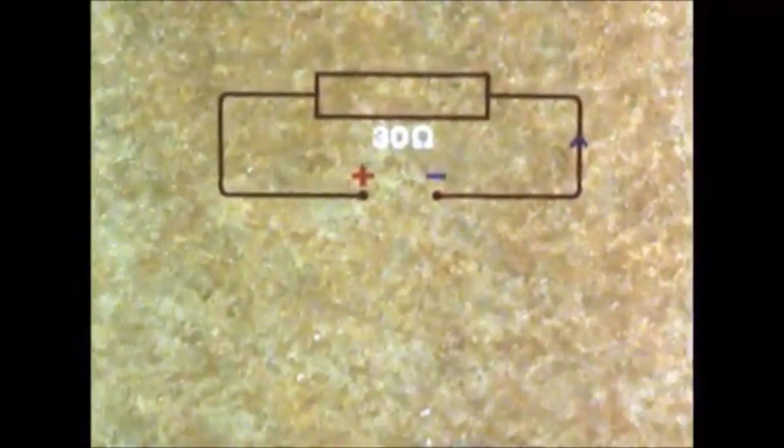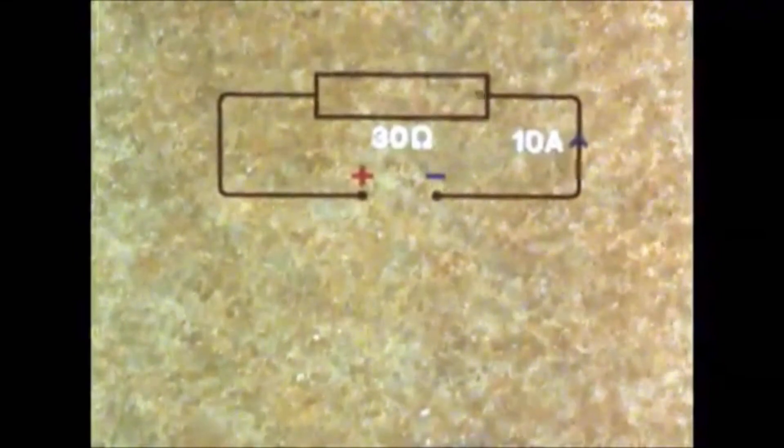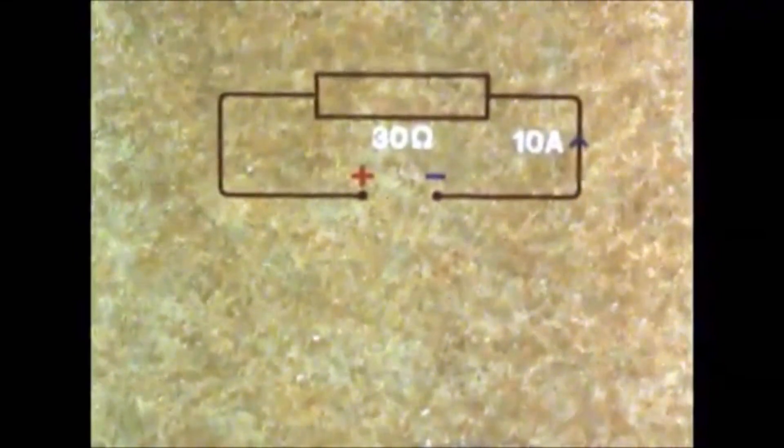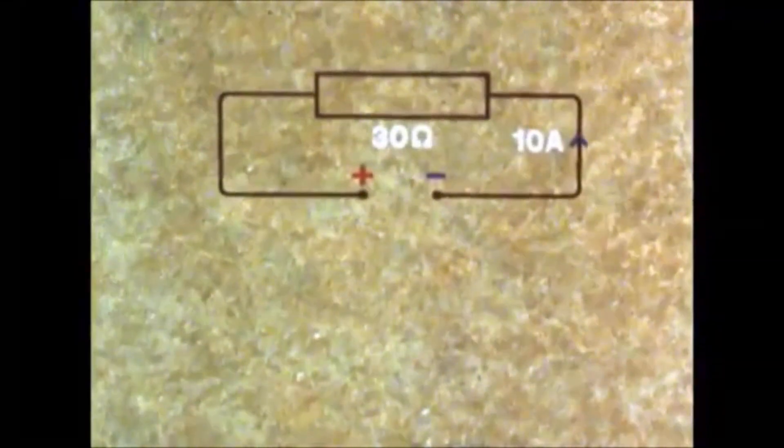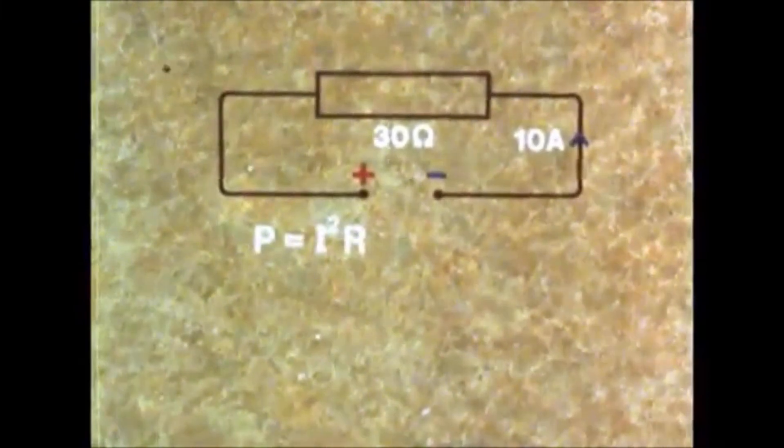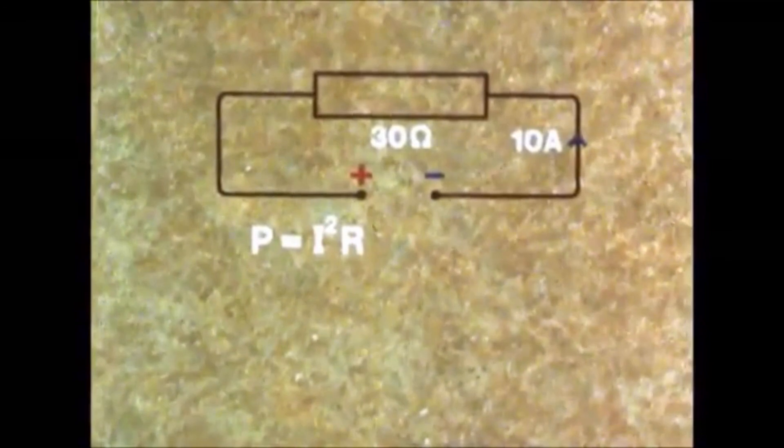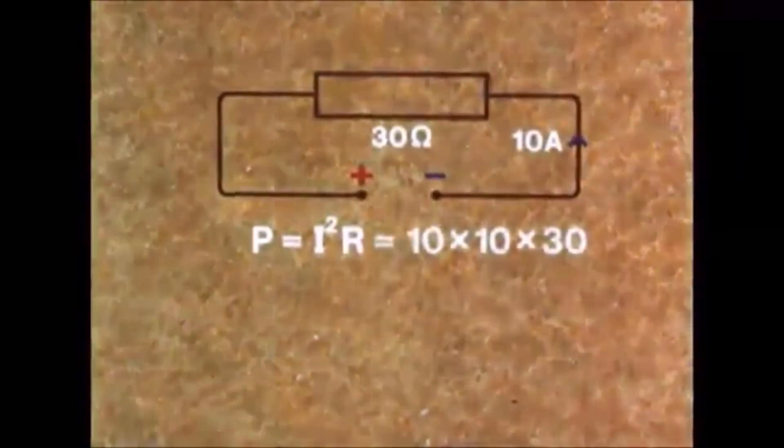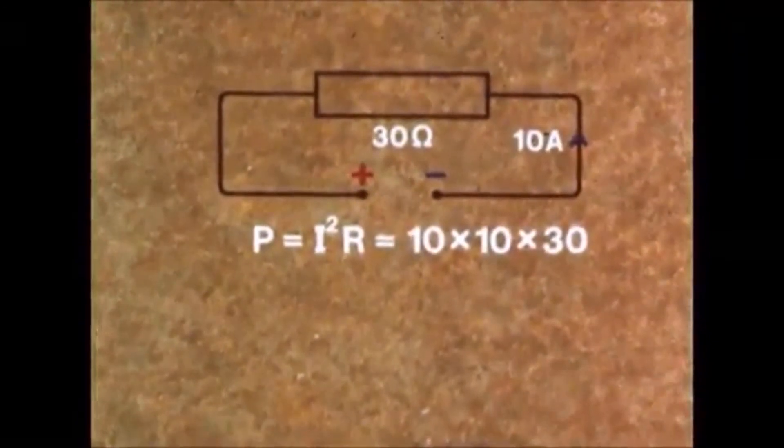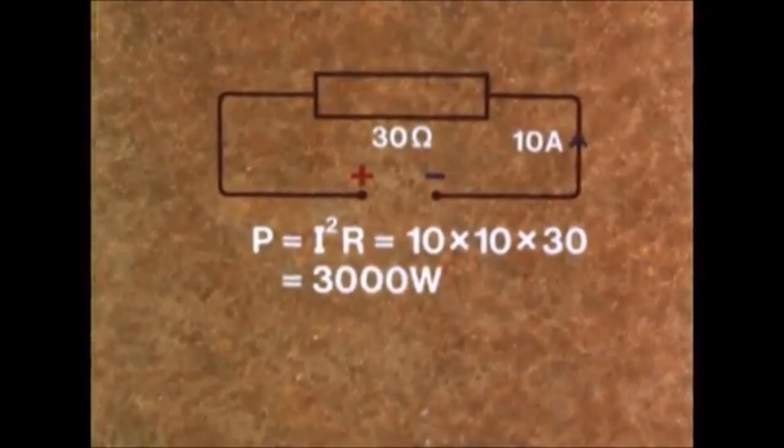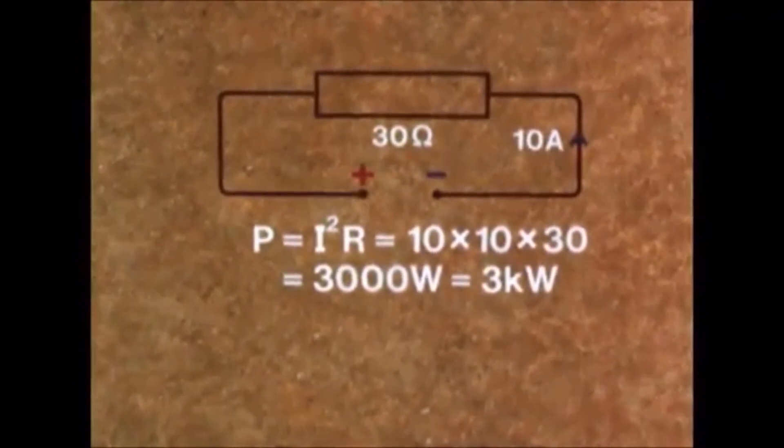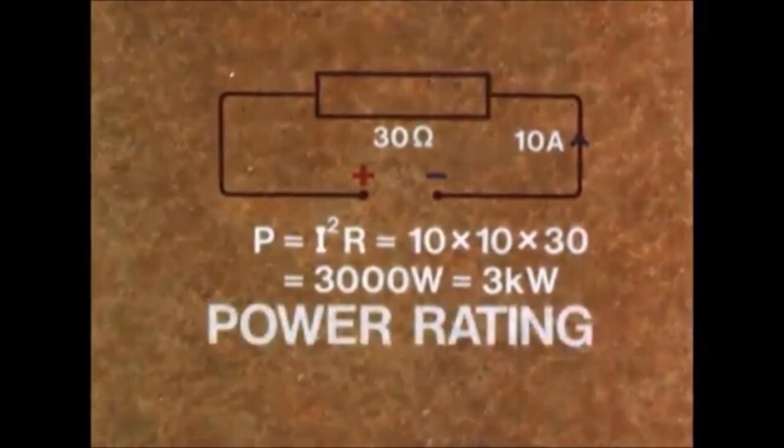And finally, consider a circuit with a resistor of 30 ohms, a heater say, and a current of 10 amps. What is the power taken by the heater? Well, P equals I squared R, so P equals 100 times 30, which equals 3000 watts, 3 kilowatts. And this is called the power rating of the heater.